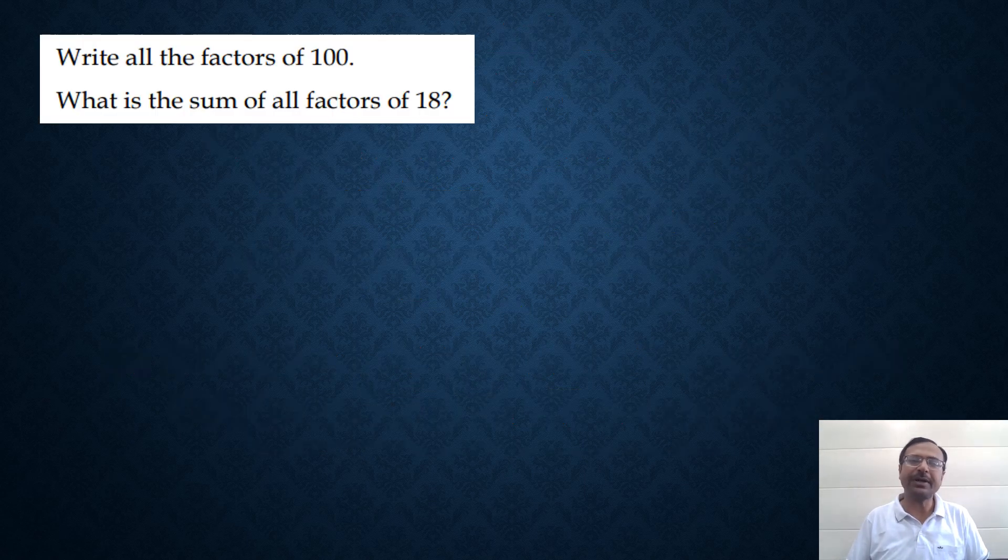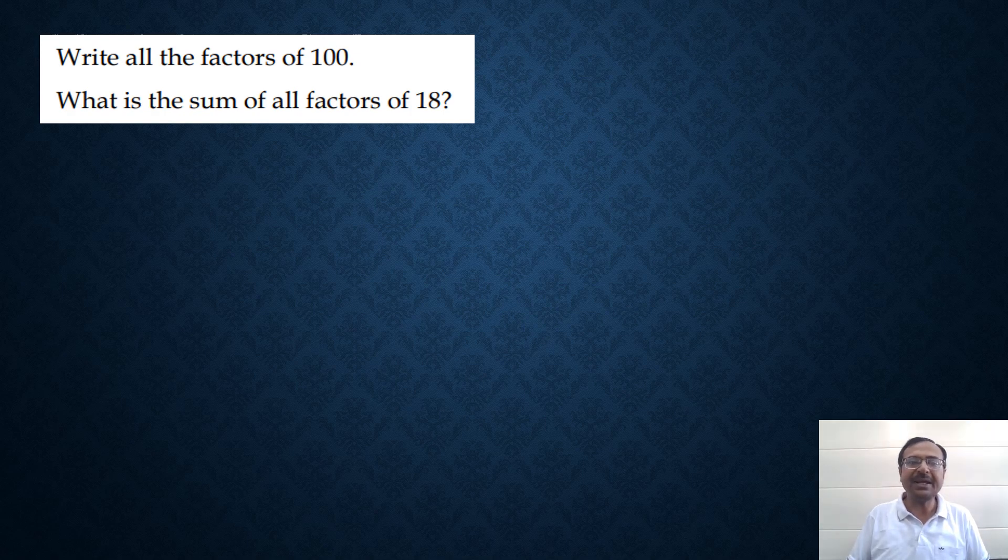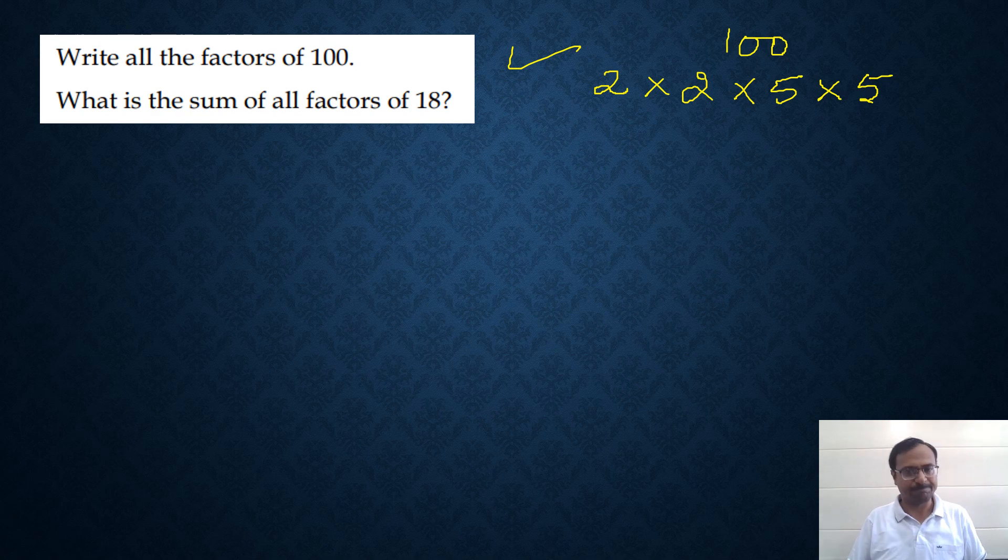Let's see the questions I have to take up for this video. Writing all the factors of a particular number - the first question is 100. If you do prime factorization of 100, this is going to be 2 times 2 is 4, 4 times 5 is 20, and 20 times 5 is 100. So we have done the prime factorization. How many 2's are there? Two 2's. And how many 5's? Two 5's.